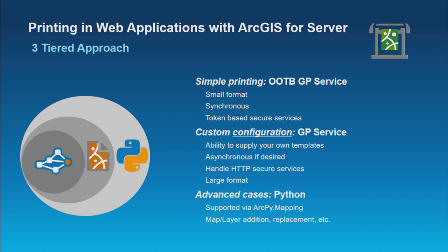There are three tiers with the ArcGIS platform for printing from a web application. The first one is the out-of-the-box GP print service. When you install server, a service gets kicked off and starts running automatically. It's designed to allow developers and application developers to do simple exports from web applications via server — really designed for small format, synchronous, and token-based web services.